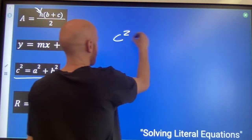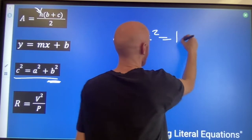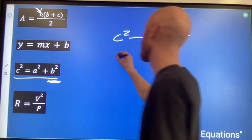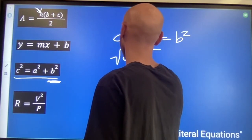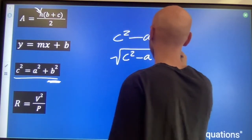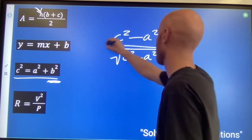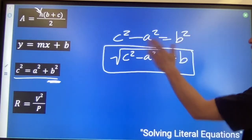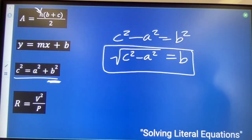I'm gonna need to subtract A squared from both sides. So we got C squared minus A squared equals B squared. And then how do we get rid of a square? We take the square root. Square root of this difference is the letter B. Opposite operations to move things away from whatever variable we care about.